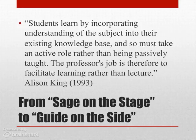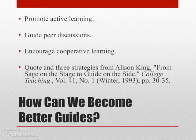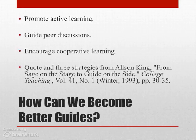Guide on the side is a new slogan meant to compete with the sage on the stage model. In a 1993 paper, Allison King talks about students taking a more active role in learning. Simultaneously, the teacher de-emphasizes lecturing and emphasizes facilitating learning in other ways. King suggests three ways in which a teacher can become a facilitator: promote active learning, guide peer discussions, and encourage cooperative learning. In all three of these suggestions, King is placing the emphasis on the students' activities. The teacher helps organize and gives direction, but the students are energetically engaged, not merely passively soaking things up.